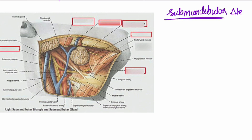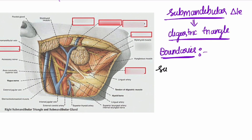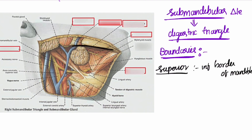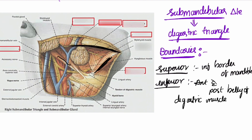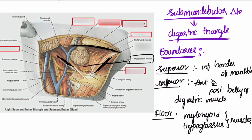Now let us look at the individual triangles within the anterior triangle. First, the submandibular triangle, also known as the digastric triangle. Its boundaries are: superiorly, the inferior border of the mandible; inferiorly, the anterior and posterior bellies of the digastric muscle. The floor is formed by the mylohyoid and hyoglossus muscles, and the roof is the deep layer of the cervical fascia.